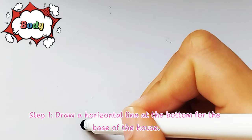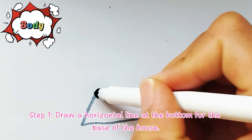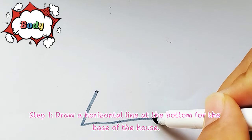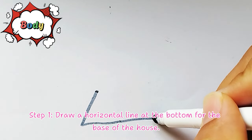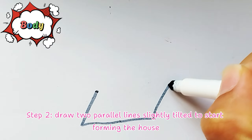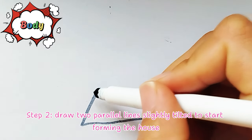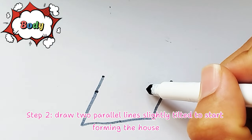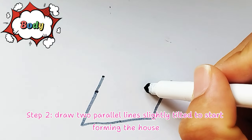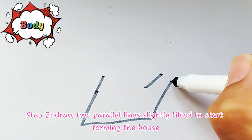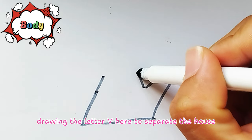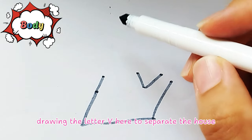Step 1: Draw a horizontal line at the bottom for the base of the house. Step 2: Draw two parallel lines slightly tilted to start forming the house, drawing the letter V here to separate the house.